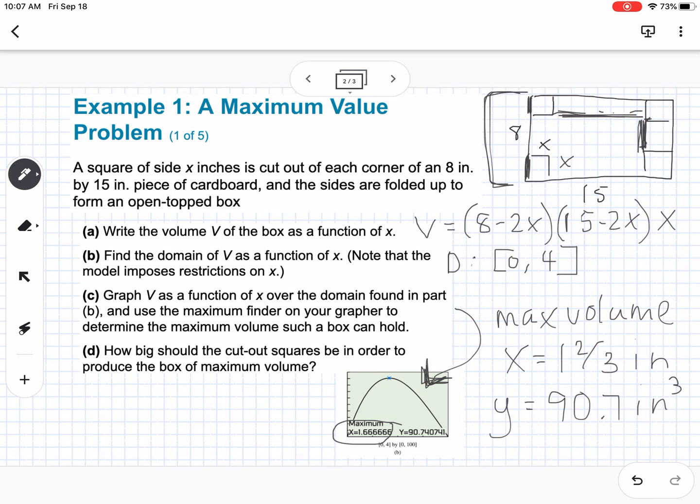And so I guess that just answered D. How big should the cut out squares be in order to produce the box of maximum volume? So your squares should be 1 and 2/3rds inches for each side. Okay, so that is example one.